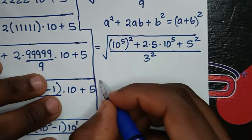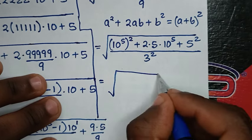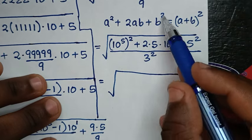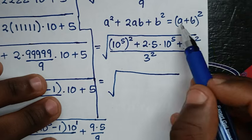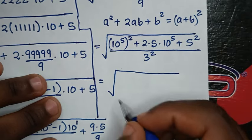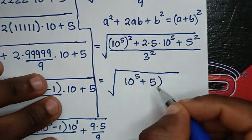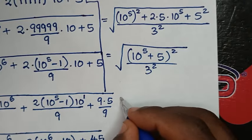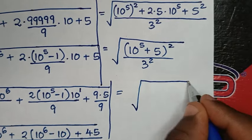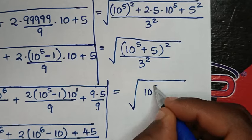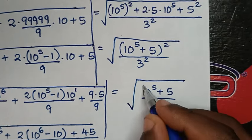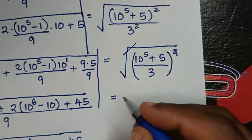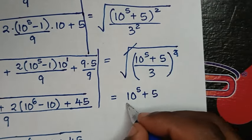Then in the next step, it will be equal to — now square root — here when you compare: a square with (10 power of 5) bracket square, a is 10 power of 5; b square with 5 square, b is 5. So into this form (a + b) bracket square, it will be 10 power of 5 plus 5. So here: (10 power of 5 plus 5) bracket square, then over 3 square. Then it will be equal to square root of — here square is common — so it will be (10 power of 5 plus 5 over 3) bracket square. Then from here this square root will cancel with corner square, so it will be equal to 10 power of 5 plus 5 over 3. Then from here it will be equal to: 10 power of 5 is same as 1 with 5 zeros — 1, 2, 3, 4, 5 — then plus this 5 over 3.